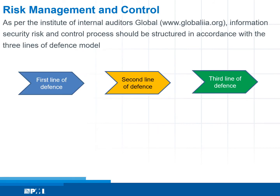Moving on to risk management and control. As per the Institute of Internal Auditors, information security risk and control processes should be structured in accordance with the three lines of defense model: first line, second line, and third line of defense. The first line of defense refers to risk owners or managers, typically operation management.